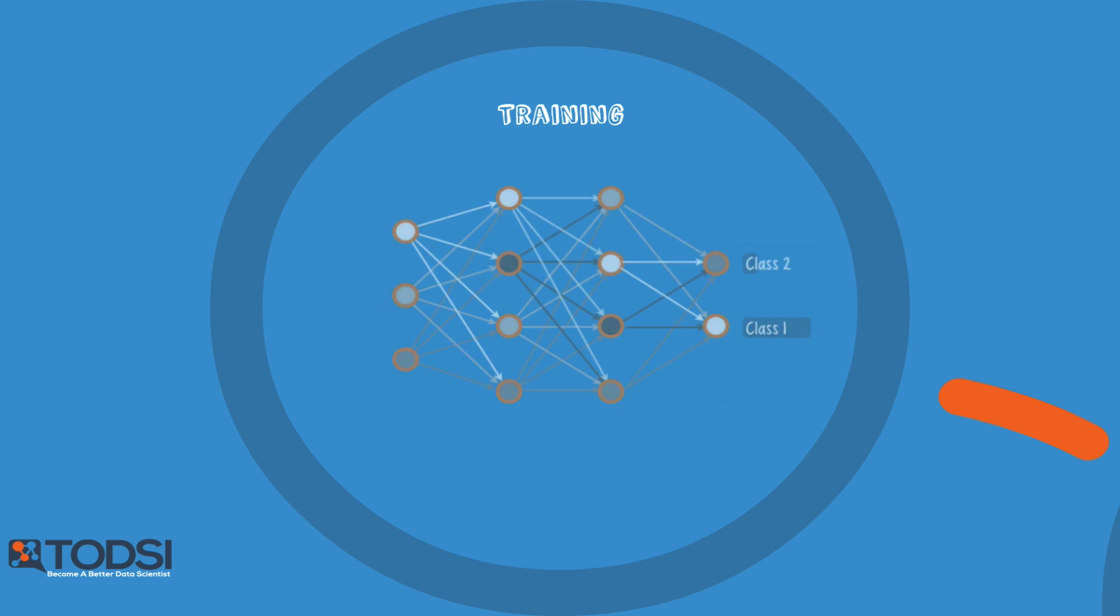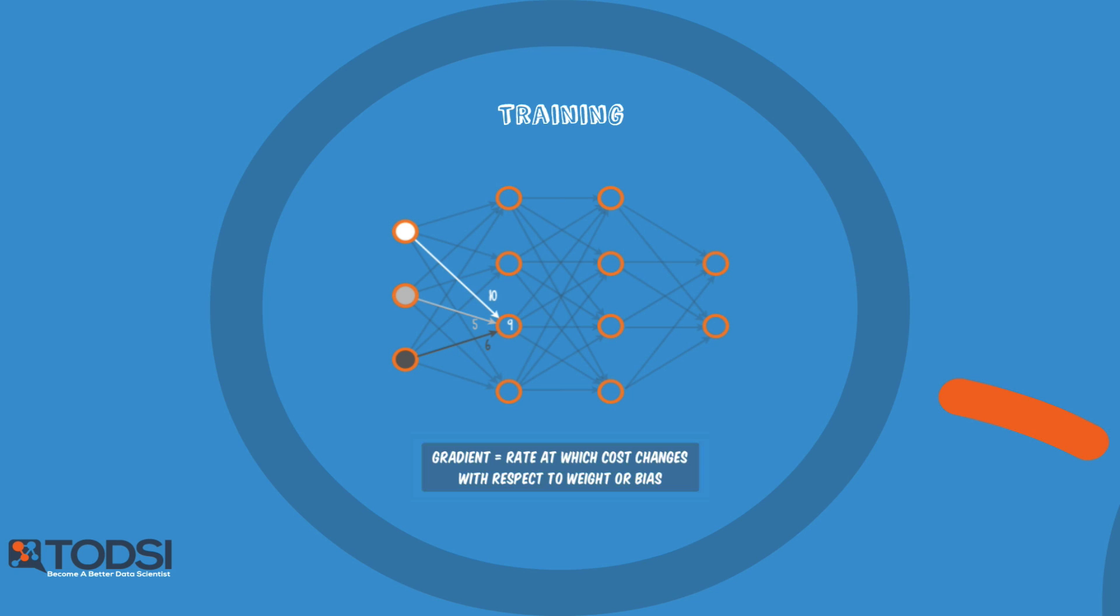Here's that forward prop again, and here are example weights and biases. The training process utilizes something called a gradient, which measures the rate at which the cost will change with respect to a change in a weight or a bias.